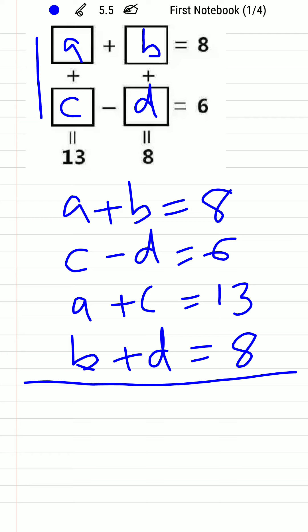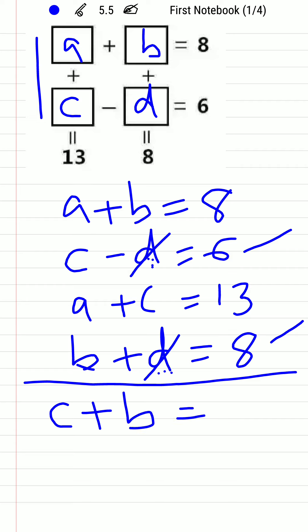Looking at equations 2 and 4, d is common in both. If we add these two equations, the d terms cancel out. We get c + b = 6 + 8, which is 14.